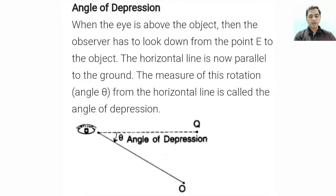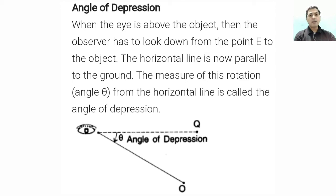Angle of depression: when the eye is above the object, the observer has to look down from point E to the object. The horizontal line is now parallel to the ground. The measure of this rotation angle theta from the horizontal line is called the angle of depression. Here the object will be downwards and the angle formed between the horizontal line and line of sight is known as angle of depression.